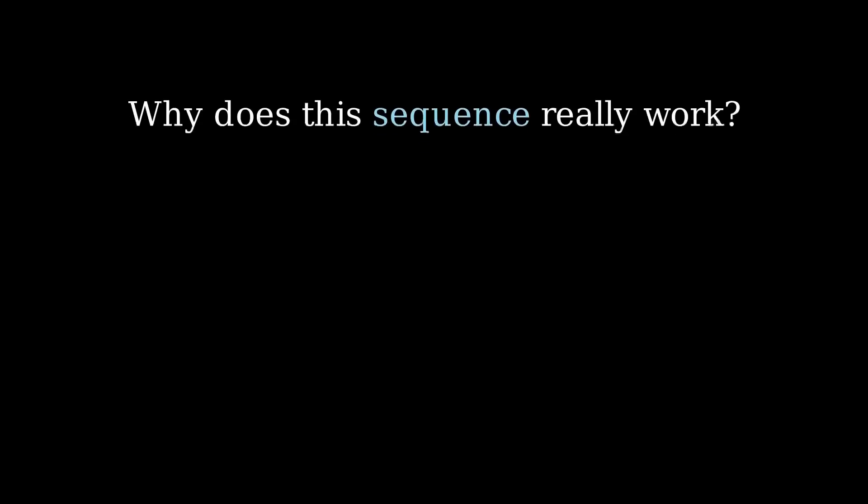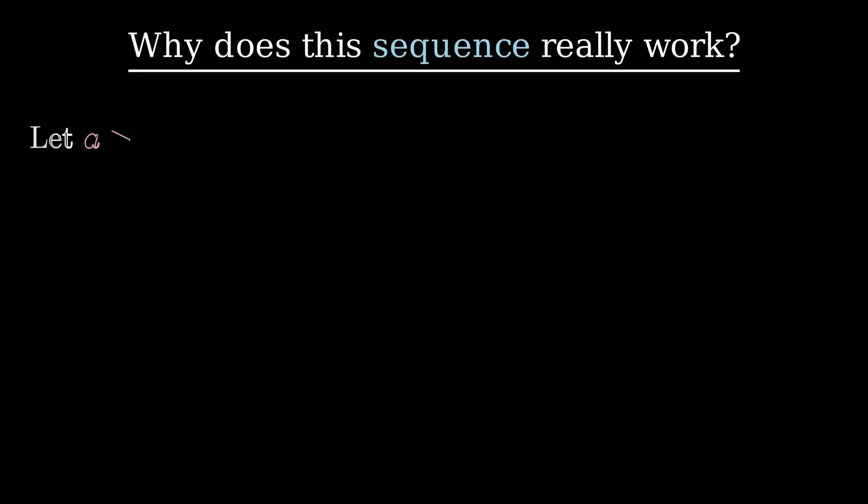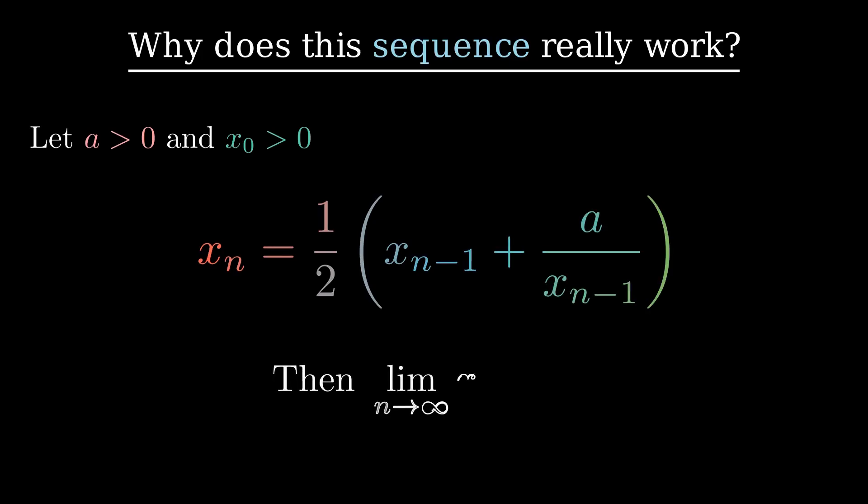Great, but why does this sequence really work? Let's start from the beginning and frame the problem mathematically. Let a and x0 be greater than 0 and consider the sequence. Then, as n tends to positive infinity, the sequence converges to the square root of a.